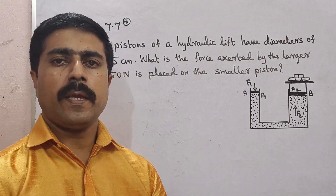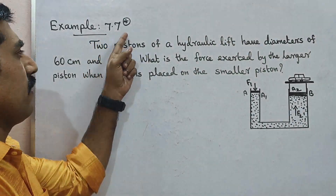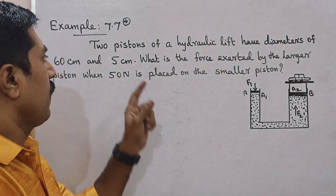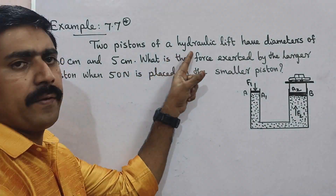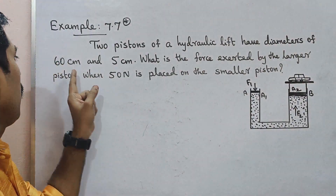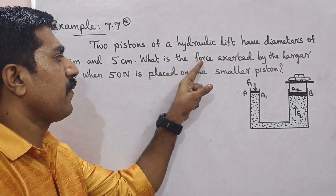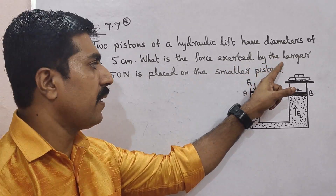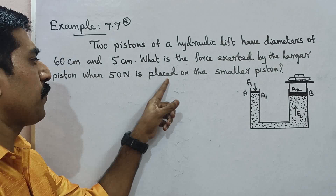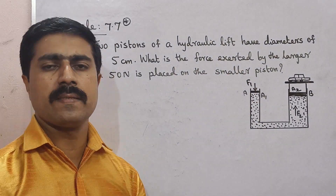Hi students, now we are going to discuss the problem. Example 7.7 is very important. See the question: Two pistons of a hydraulic lift have diameters of 60 centimeter and 5 centimeter. What is the force exerted by the larger piston when 50 Newton is placed on the smaller piston? So very simple.